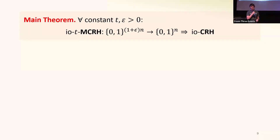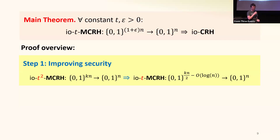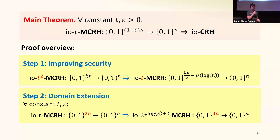Our main theorem is a bit stronger: if there's a T-MCRH for a constant T, then there's also an infinitely-often CRH, and the MCRH we start with just has to shrink by some arbitrarily small constant factor of one plus epsilon. We prove this by two transformations. The first is improving the security parameter: if there's a function family that's hard to find T-squared collisions in, then there's also a function family hard to find T collisions in. The second is a domain extension result saying that if there's a 2-MCRH shrinking by a factor of 2, we can construct an MCRH that shrinks by a factor of lambda for some large constant lambda, with control over the collision resistance parameter.